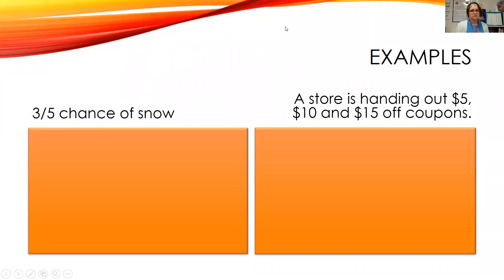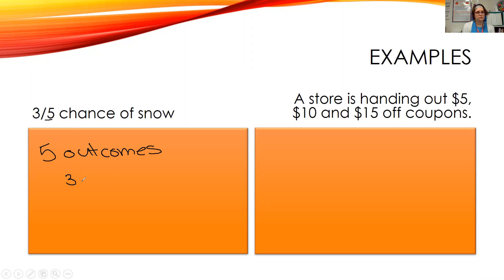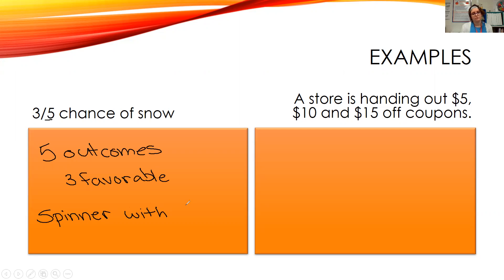A three-in-five chance of snow. There are a couple of ways we can simulate this. Five tells us the number of outcomes — we have five outcomes, but three are favorable, three are what we want. We can think about this as a spinner with five sections, where three of them represent snow.